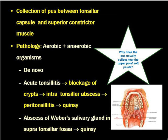Peritonsillar abscess might be caused by aerobic as well as anaerobic organisms, with anaerobes being most common. If we examine the contents of the abscess, most of the time it will be very foul smelling. There is a high chance that the anaerobic flora is associated with peritonsillar abscess in relation to tonsillitis, which is commonly caused by group A beta-haemolytic streptococcus. The infection might occur de novo, i.e., without any previous cause, or as part of acute or chronic tonsillitis.